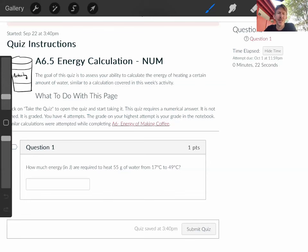This question says, how much energy in joules is required to heat 55 grams of water from 17 degrees Celsius to 49 degrees Celsius? Now, one of the key things we need to know for this is the specific heat capacity of water.